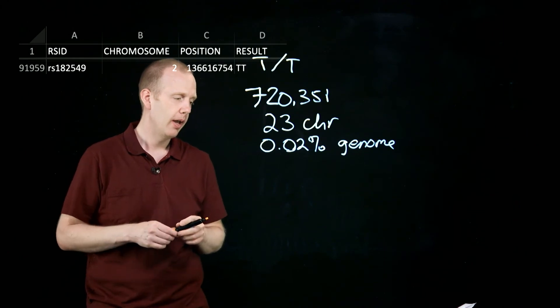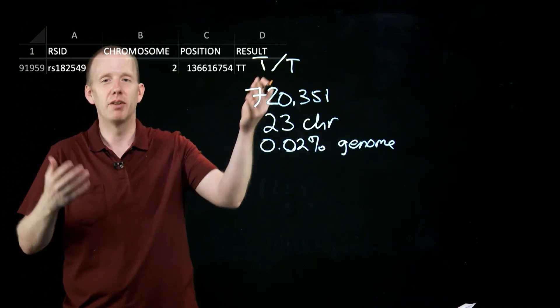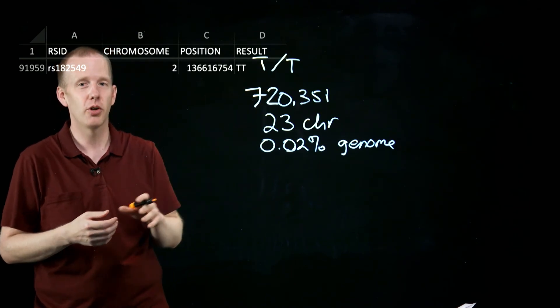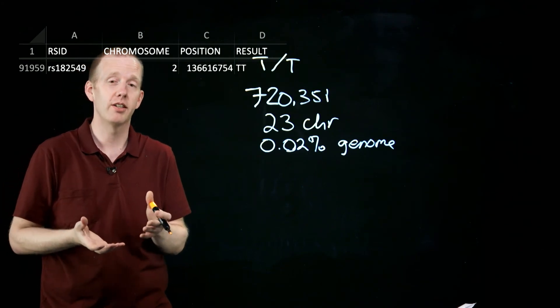So you can do this too. At RS182549 now, I know that I'm lactose or likely to be lactose tolerant. And if you want to download your genetic testing information, your ancestry testing information,